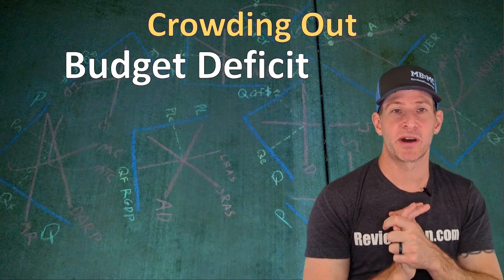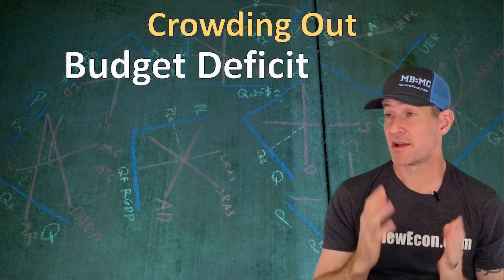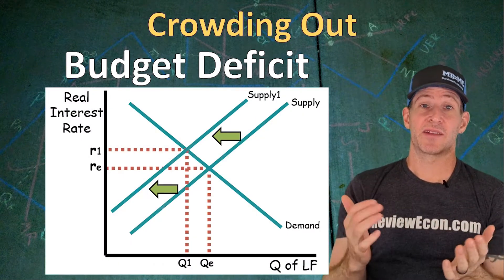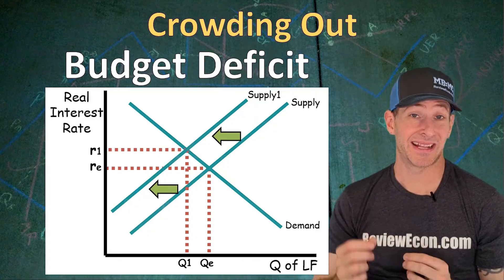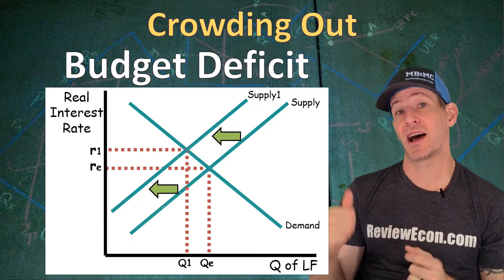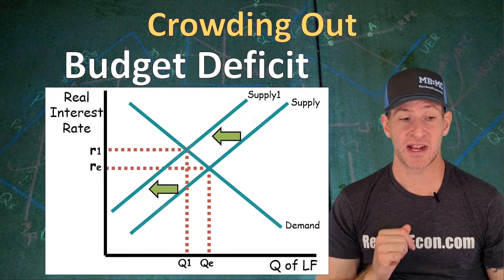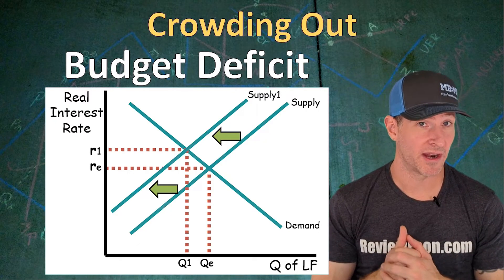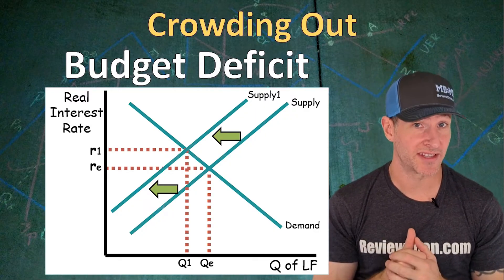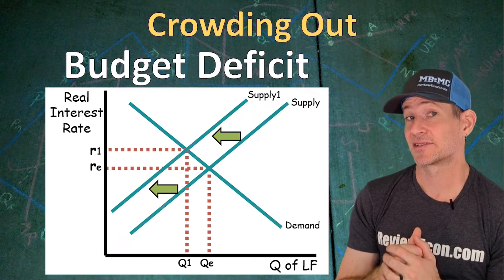When it comes to showing the impact of a budget deficit on the loanable funds market, we have two ways of doing it. My preferred method is to shift the supply curve. In this way of illustrating the budget deficit, the government is taking loanable funds from the private market, leaving a smaller supply for private businesses to borrow. As a result, we see higher interest rates and a lower equilibrium quantity of loanable funds. The x-axis here is what happens to gross investment, and we can see on that x-axis less capital formation.